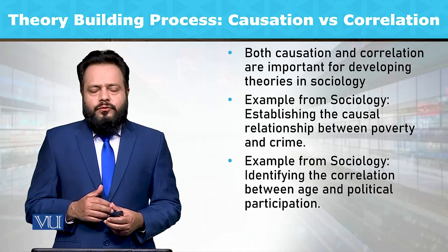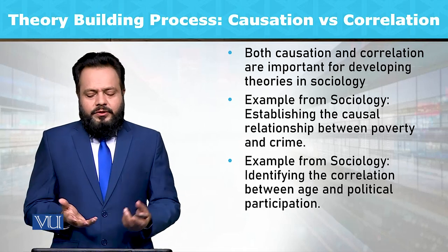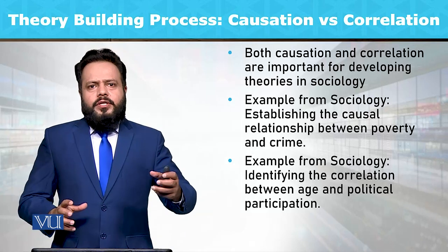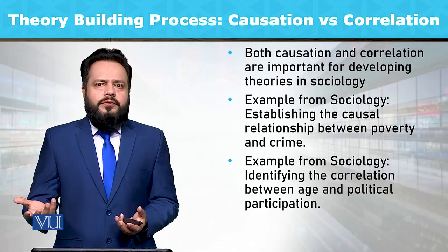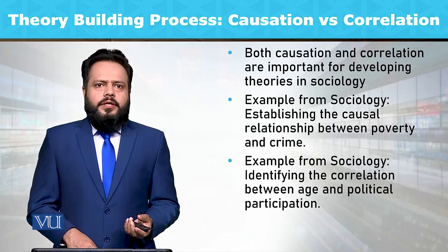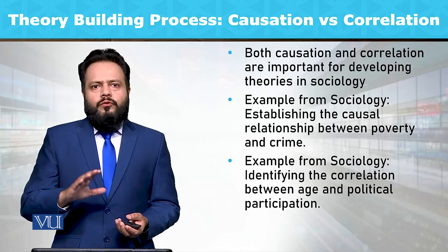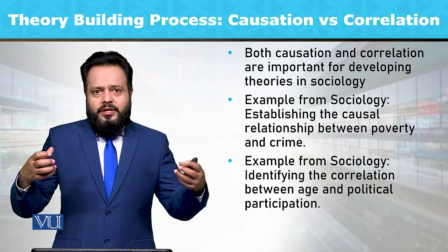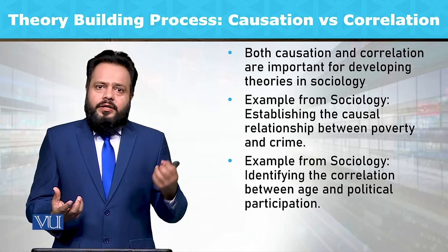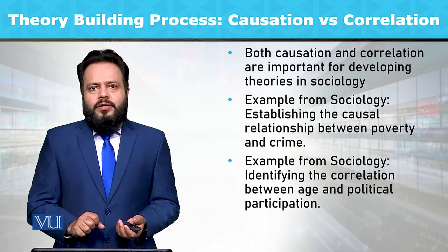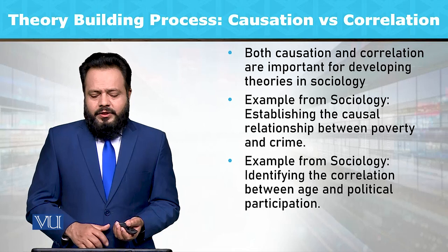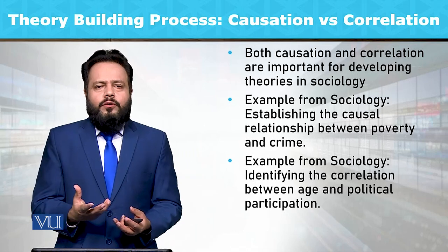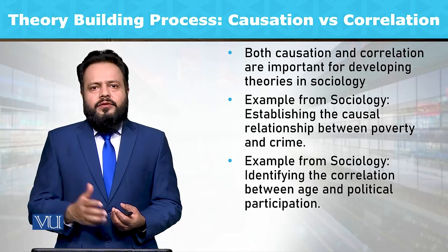So both causation and correlation are important for developing theories in sociology. For example, establishing the causal relationship between poverty and crime — ہمیں لگتا ہے کہ poverty (گربت) کا crime rate کے ساتھ تعلق ہے۔ جیسے hypothesis کہ غریب لوگ زیادہ crime commit کرتے ہیں — کیا یہ ایک direct causal relationship ہو سکتی ہے؟ اسی کو ہم correlation کے طور پر بھی دیکھ سکتے ہیں — between age and political participation، مختلف ages کے لوگوں کا voting behavior کیسا ہوتا ہے — یہ correlation ہو سکتے ہیں۔ (So both causation and correlation are important for developing sociological theories. For example, poverty may be related to crime rate — but is it a direct causal relationship? Similarly, age and political participation / voting behavior can be a correlation.)